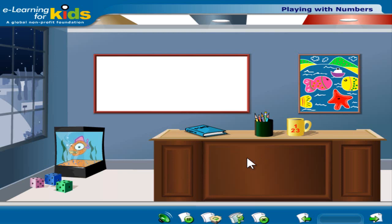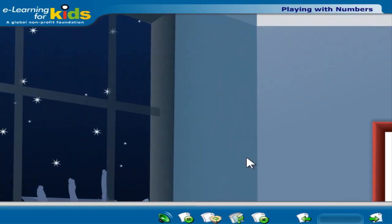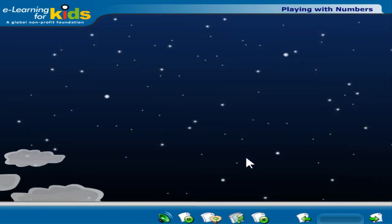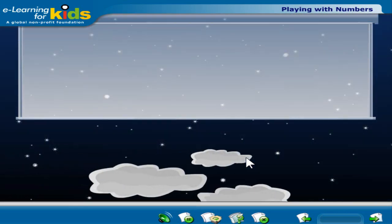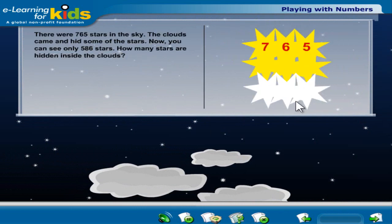Let's now learn how to subtract some big numbers. There were 765 stars in the sky. The clouds came and hid some of the stars. Now you can see only 586 stars. How many stars are hidden inside the clouds? To find the answer, you have to begin from the right side of the bigger number. You can't subtract or take away 6 from 5 because 6 is more than 5. So 5 must borrow 1 from its neighbor on the left, which makes it 15. Now you can subtract 6. When you take away 6 from 15, you get 9.